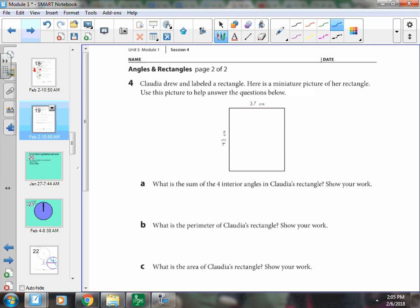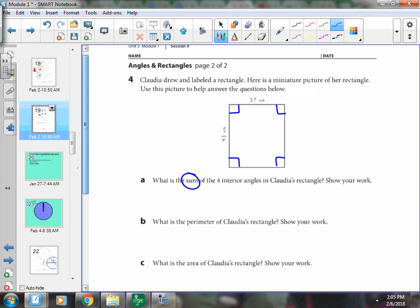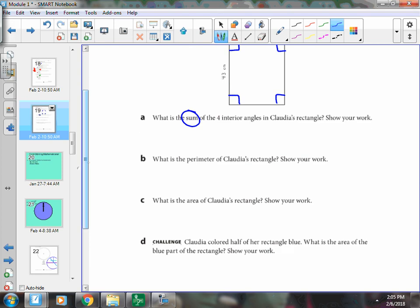What is the sum of the four interior angles? I can tell that all of the angles are 90-degree angles. If I were to add them all together, because the sum is the answer to an addition problem, so I know I need to add.